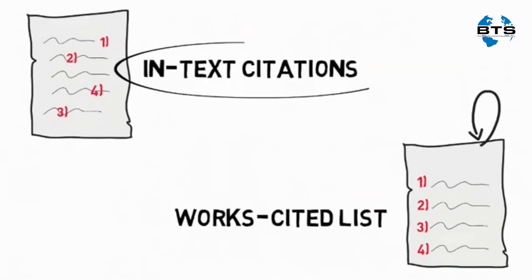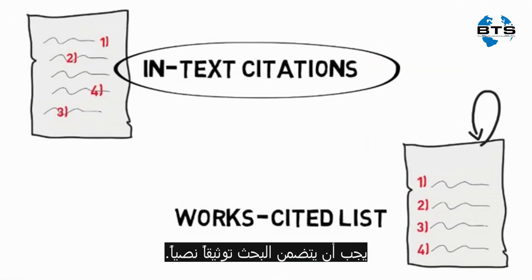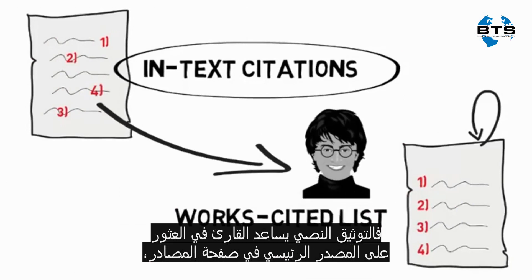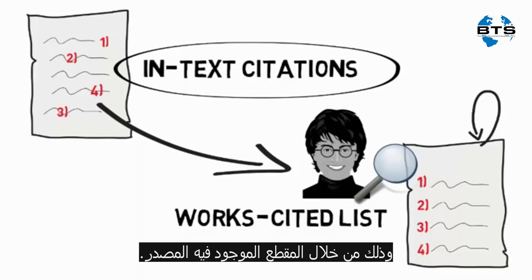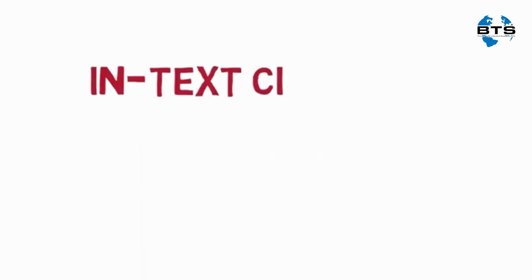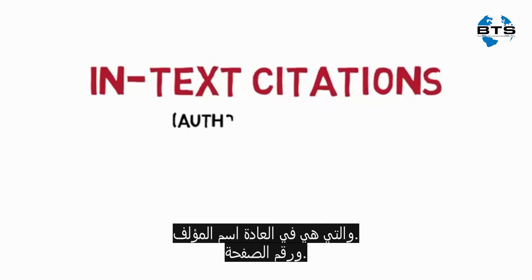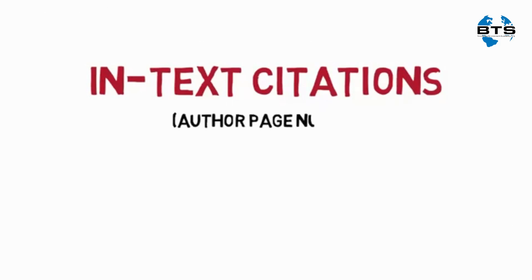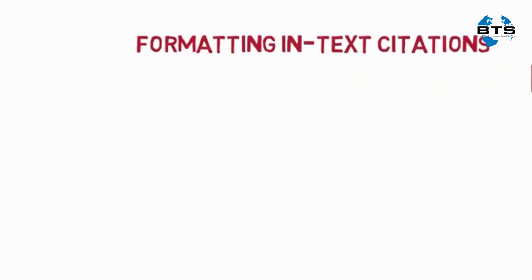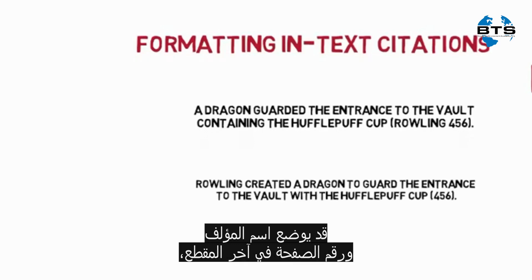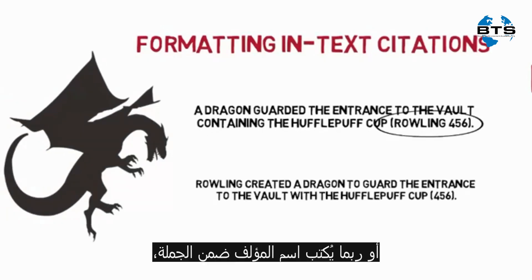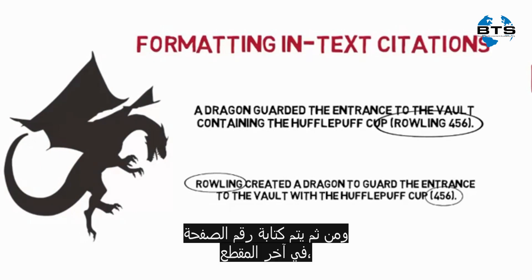In addition to Works Cited, your assignment must also contain in-text citations. In-text citations help the reader find the corresponding entry in the Works Cited list and the passage in that source. In MLA, in-text citations include the first entry in the Works Cited list, which is usually the author, and then a page number. Depending on your sentence structure, you can create an in-text citation in a few different ways. The author and the page number may be at the end of the passage, or the author may be included in the sentence with the page number listed at the end of the passage.